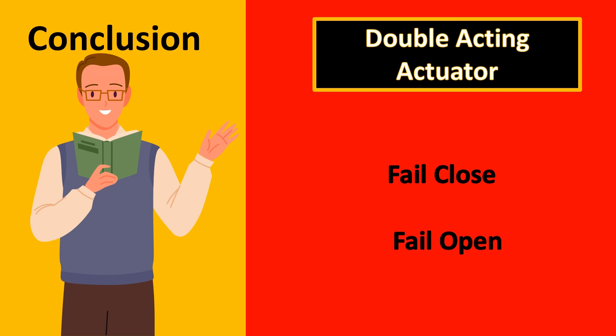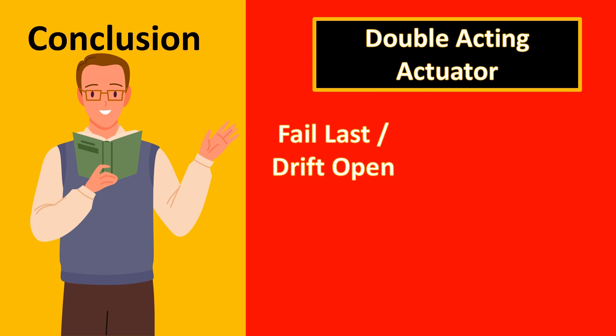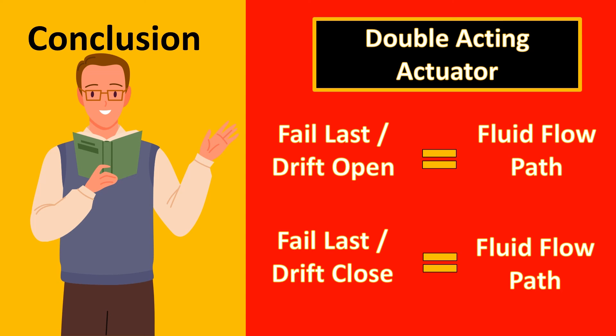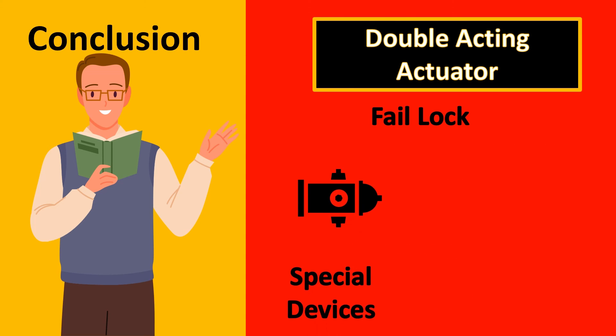If it is a double acting actuator do not mention just fail close fail open. Usually you have to come up with the option such as fail last drift open, fail last drift close and remember the flow should always assist the failure mode. Finally, there is something called as fail lock where you use special devices which are added to control valve which actually protects the air or the fluid inside to trap out. So the last position is where the control valve is locked.